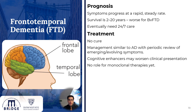The prognosis is usually much more rapid than Alzheimer's disease in terms of progression. Survival is somewhere between 2 to 20 years, and it is particularly worse with the behavioral variant, with patients eventually needing 24/7 care. There is no treatment, and management is similar to the three pillars of Alzheimer's disease management, with periodic review of evolving and emerging symptoms. Cognitive enhancers used for Alzheimer's may actually worsen the clinical presentation in frontotemporal disease, and there is no role for monoclonal therapies at this point.